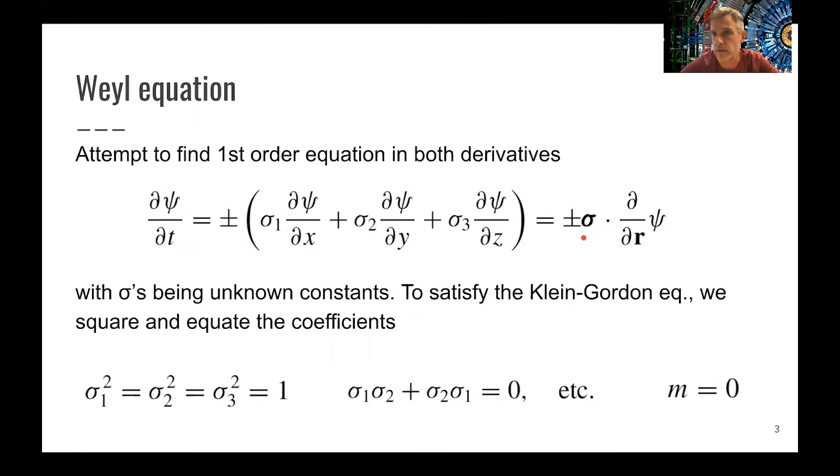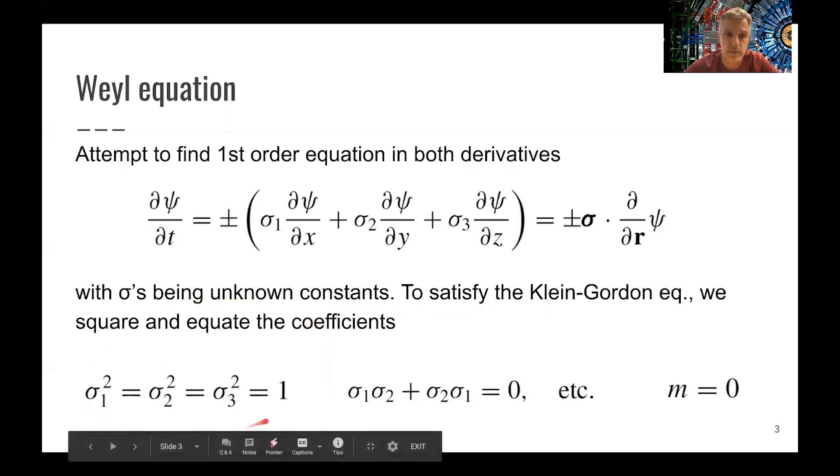Let me just say there's a constant between those two, relating those two. So the sigmas are just unknown constants. So if you now try to find by squaring this, try to find the Klein-Gordon equation and relate the coefficients, you find this relationship here.